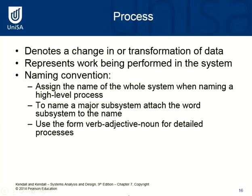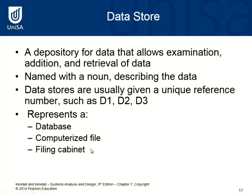A process denotes a change in or transformation of data. If the same data that goes into a process is the same data that comes out, it's not really a process — something has to happen within it. It represents the work being performed in the system, i.e., our use cases. For naming conventions: assign the name of the whole system when naming a high-level process; to name a major subsystem, attach the word 'subsystem' to the name; and use the form verb-adjective-noun for detailed processes.